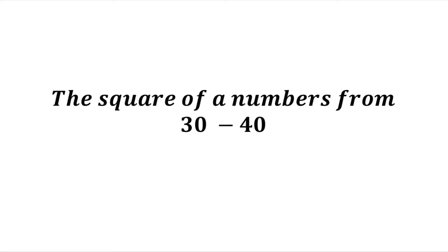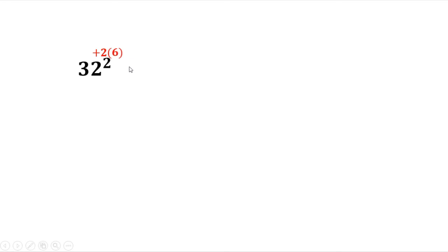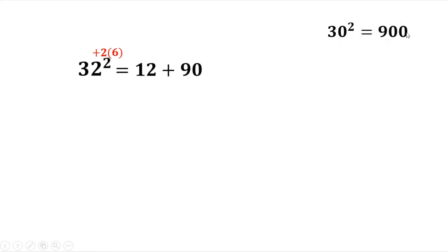The square numbers we're working with are from 30 to 40. For example, 32 squared: 32 is 30 plus 2. Multiply 2 by 6 — because the first term 3 times the exponent 2 equals 6 — giving 12. Then add 90, because 30 squared is 900 and its first two digits are 90. So 12 plus 90 is 102. The square of 2 is 4, therefore 32 squared equals 1024.